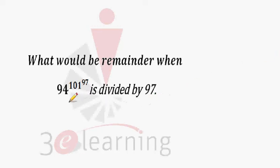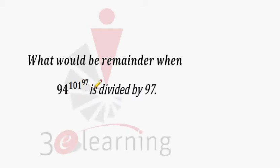Today we see the concept of cyclicity. We have a question: 94 raised to power 101 raised to power 97, divided by 97. For this we are going to use two concepts: one is cyclicity, and another key rule for evaluating towers of powers.